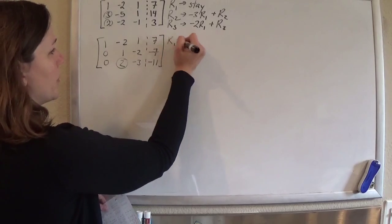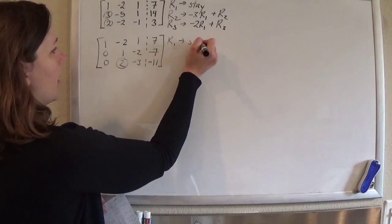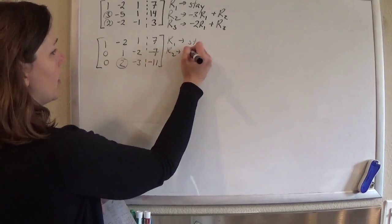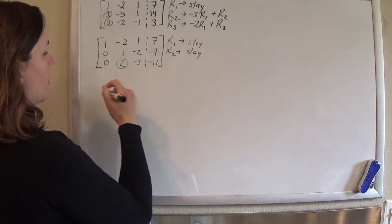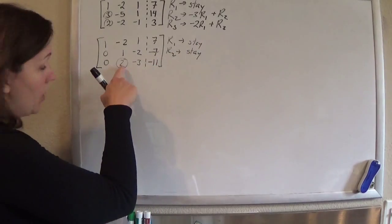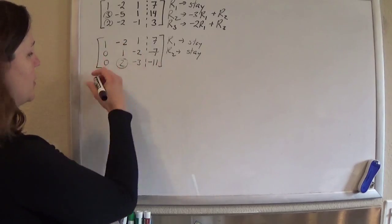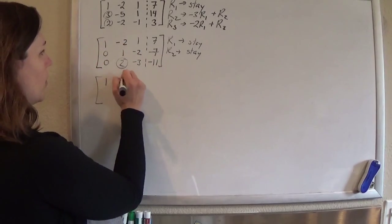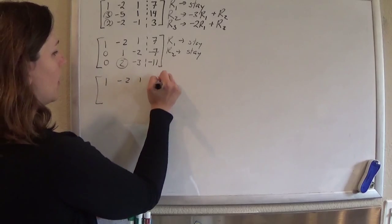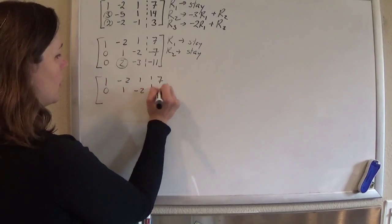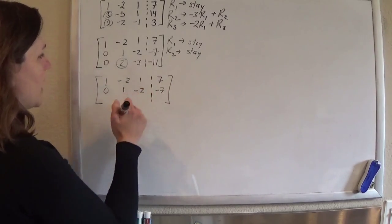So now, we're going to let both row 1 and row 2 stay. And we're going to get 0's in column 2 using row 2. So I'm going to let row 1 and row 2 stay exactly the same.